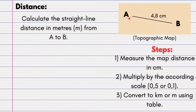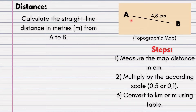In the diagram we can see there are two points, A and B, with a line joining the two. On your map you will know what type of item they are asking you to measure — it could be a runway or a national road. For your steps to calculate straight line distance: first, measure the map distance in centimeters. I measured 4.8 centimeters. Next, multiply by the appropriate scale factor — either 0.5 or 0.1 — and then convert to kilometers or meters using the conversion table.